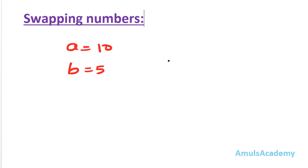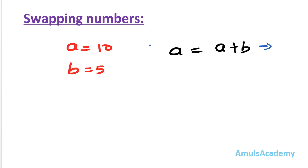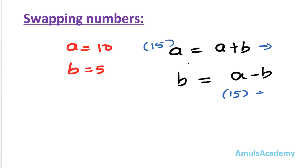Now the second way is swapping two numbers without using a third variable. For this we add and subtract the values to get the desired output. With a equal to 10 and b equal to 5, first I add a plus b and store the result in a. So a becomes 15.